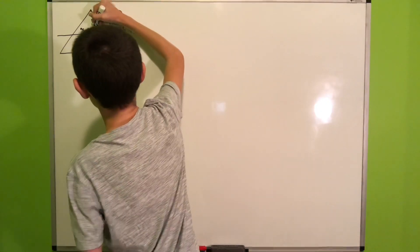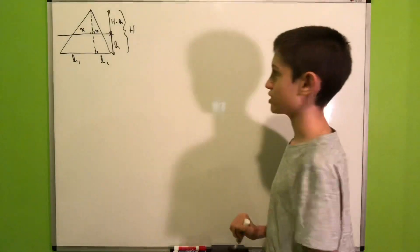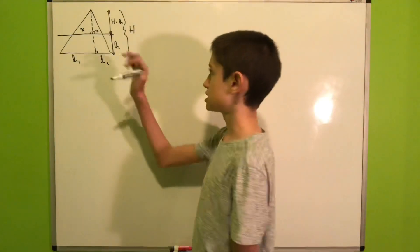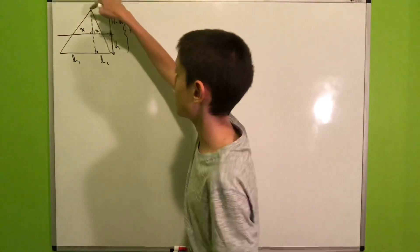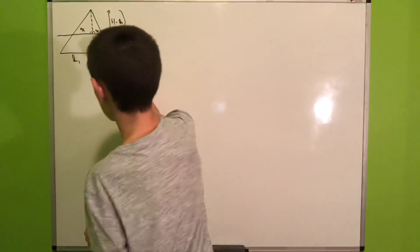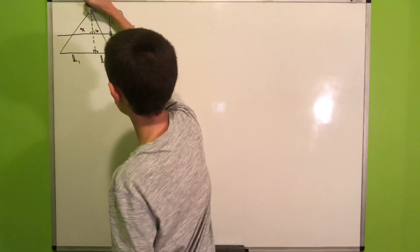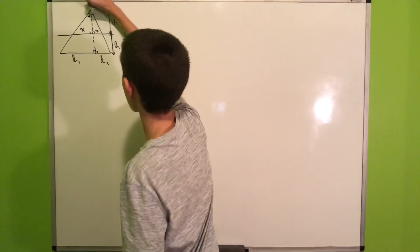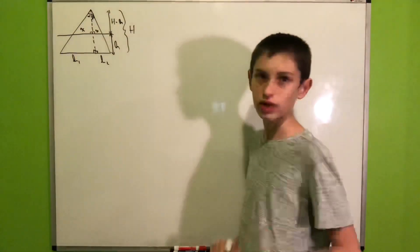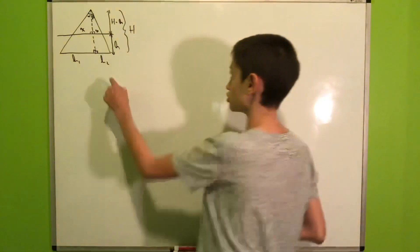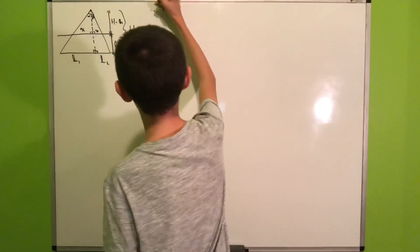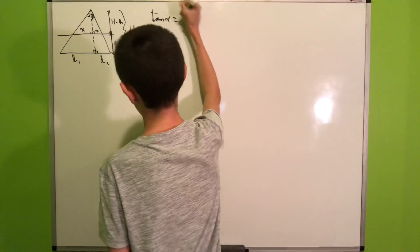We'll also call this length x and this length y. Because of the parallel line, we have two pairs of similar triangles: this one and this one, and this one and this one. They are both right triangles, and for this first pair they share this angle alpha, for the second pair they share the angle beta, and hence by angle-angle they are similar.